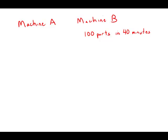So first of all, if machine B produces 100 parts in 40 minutes and A is twice as fast, then A should produce 100 parts in only 20 minutes, twice as fast.